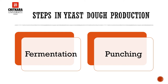It is important to be aware that fermentation continues during the next steps in yeast dough production. That includes punching, scaling, rounding, pinching, and make up or molding. Failure to allow for this time may result in over-fermented dough.